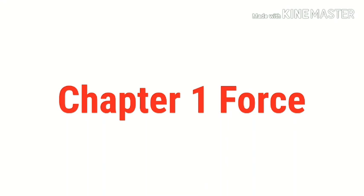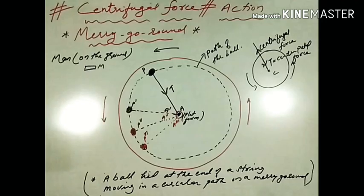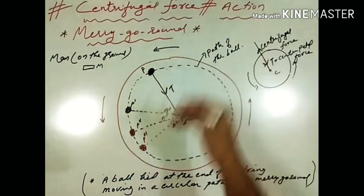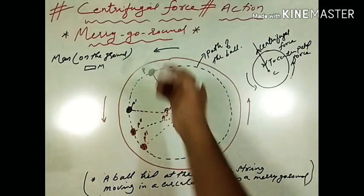Centrifugal force acts in a direction opposite to that of the centripetal force. It is not a real force. To understand this force, let us consider the case of a merry-go-round and try to understand why this centrifugal force is required to describe certain motion, although it is not the real force — it is a fictitious force. Let us study its action on a merry-go-round.